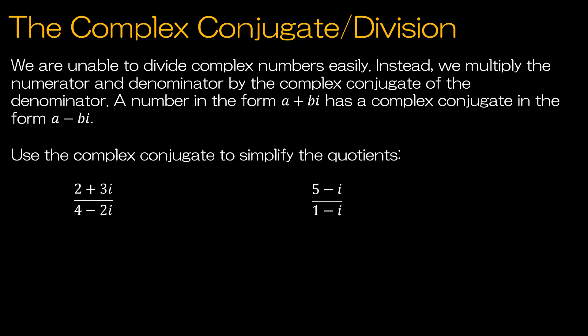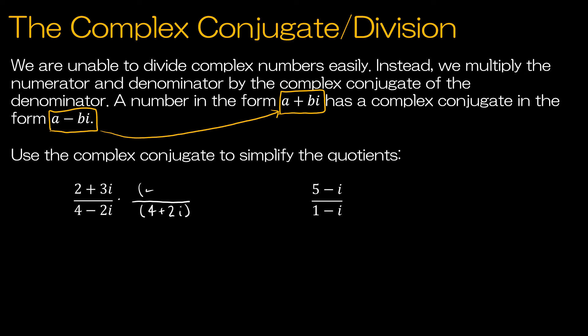Near the beginning of this video I said we can sort of divide with complex numbers, but instead of division, we're going to multiply by the complex conjugate of the denominator. A complex conjugate sounds complicated, but really, if you have a number in the form a plus bi, the complex conjugate has the form a minus bi. So a minus bi has a complex conjugate of a plus bi. All we're doing is changing the operation between a and b. Let's take a look at our first example. 4 minus 2i is my denominator; I'm going to multiply by the conjugate, which is 4 plus 2i — we're just changing the sign.